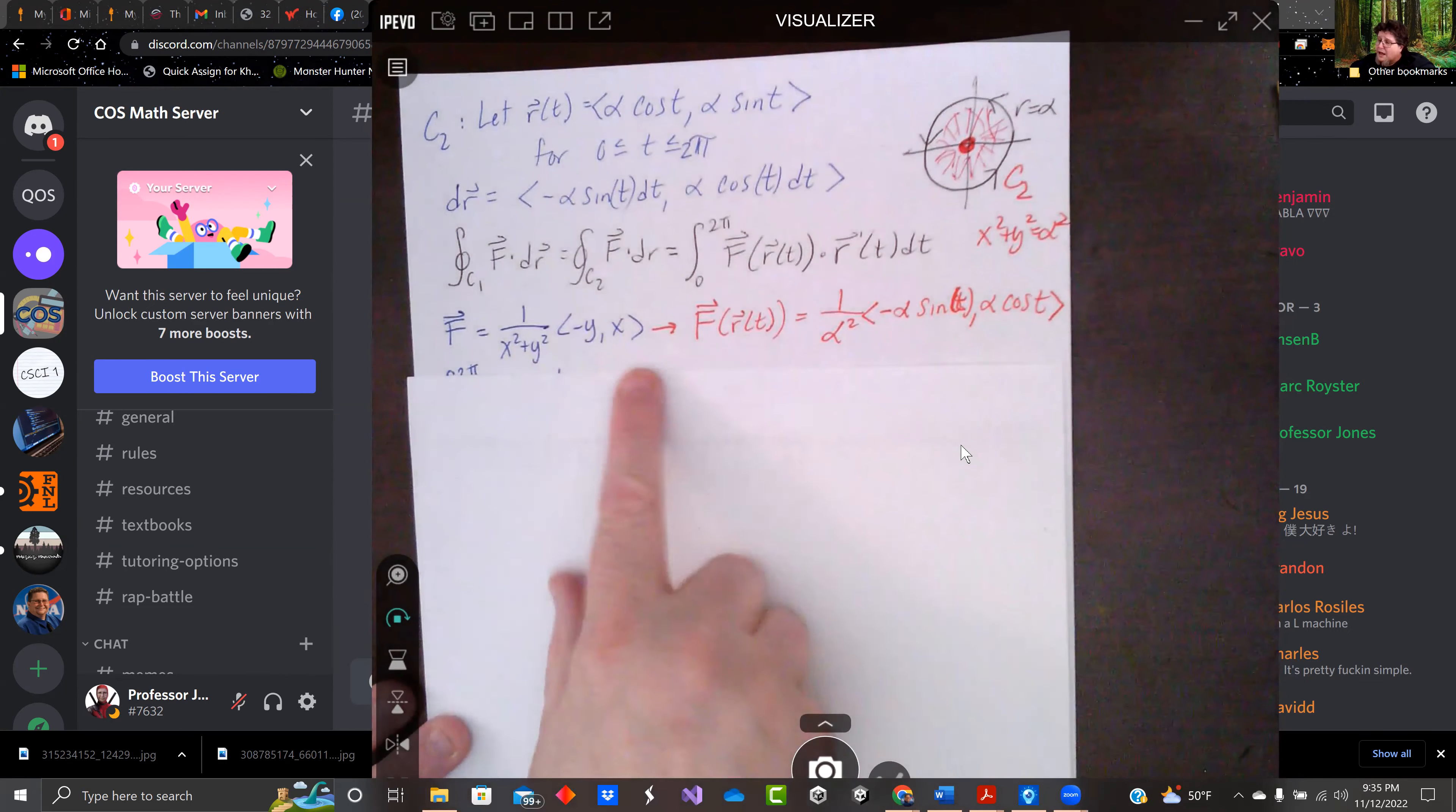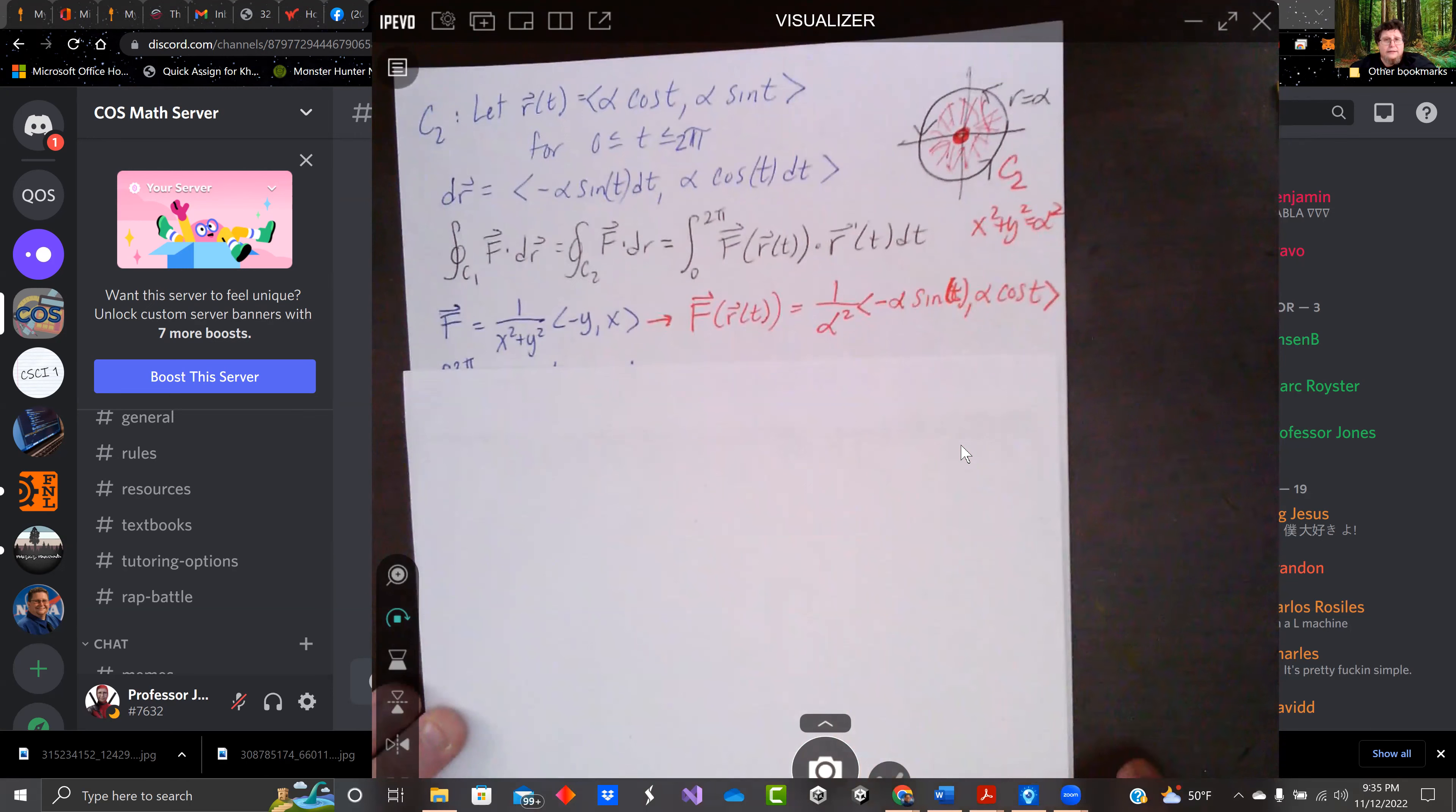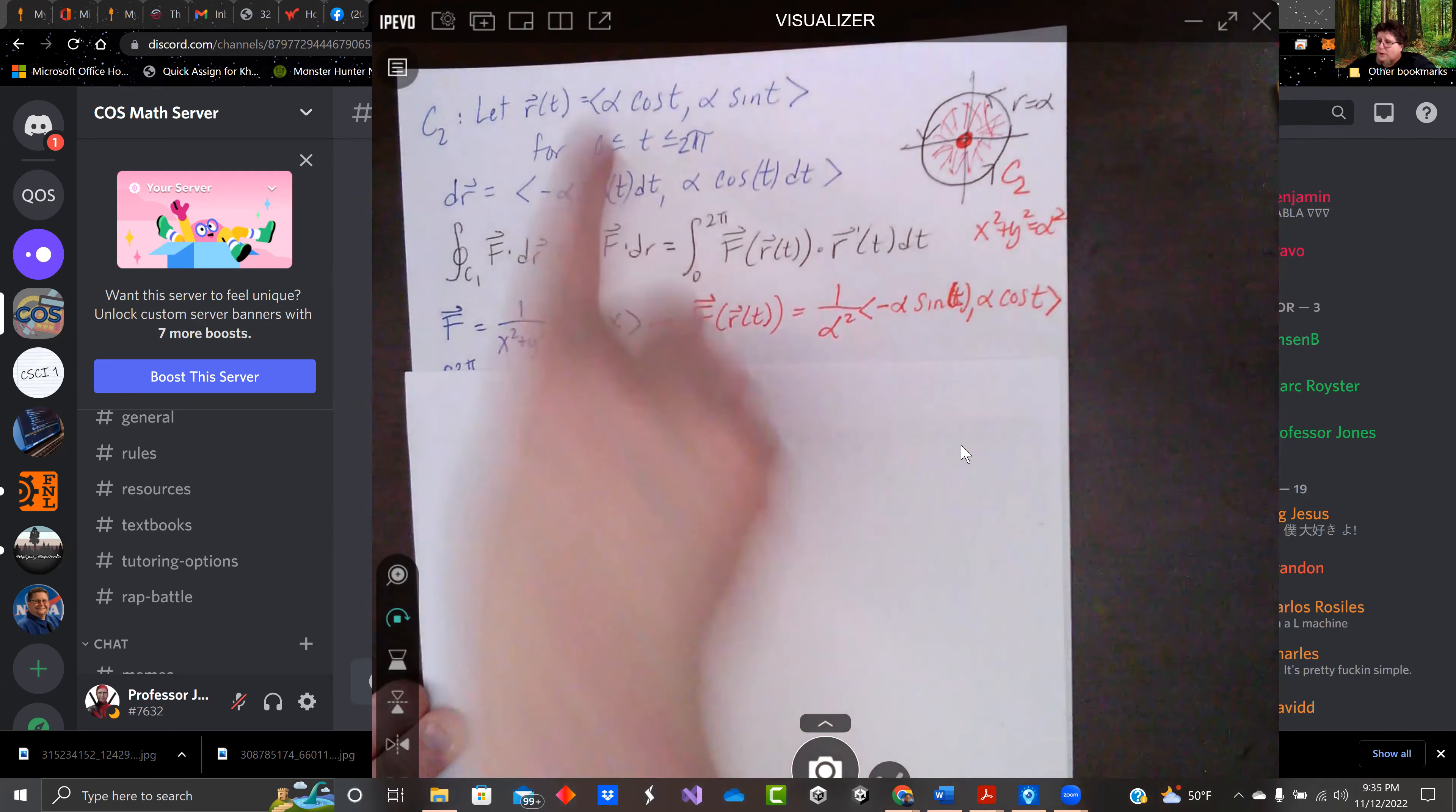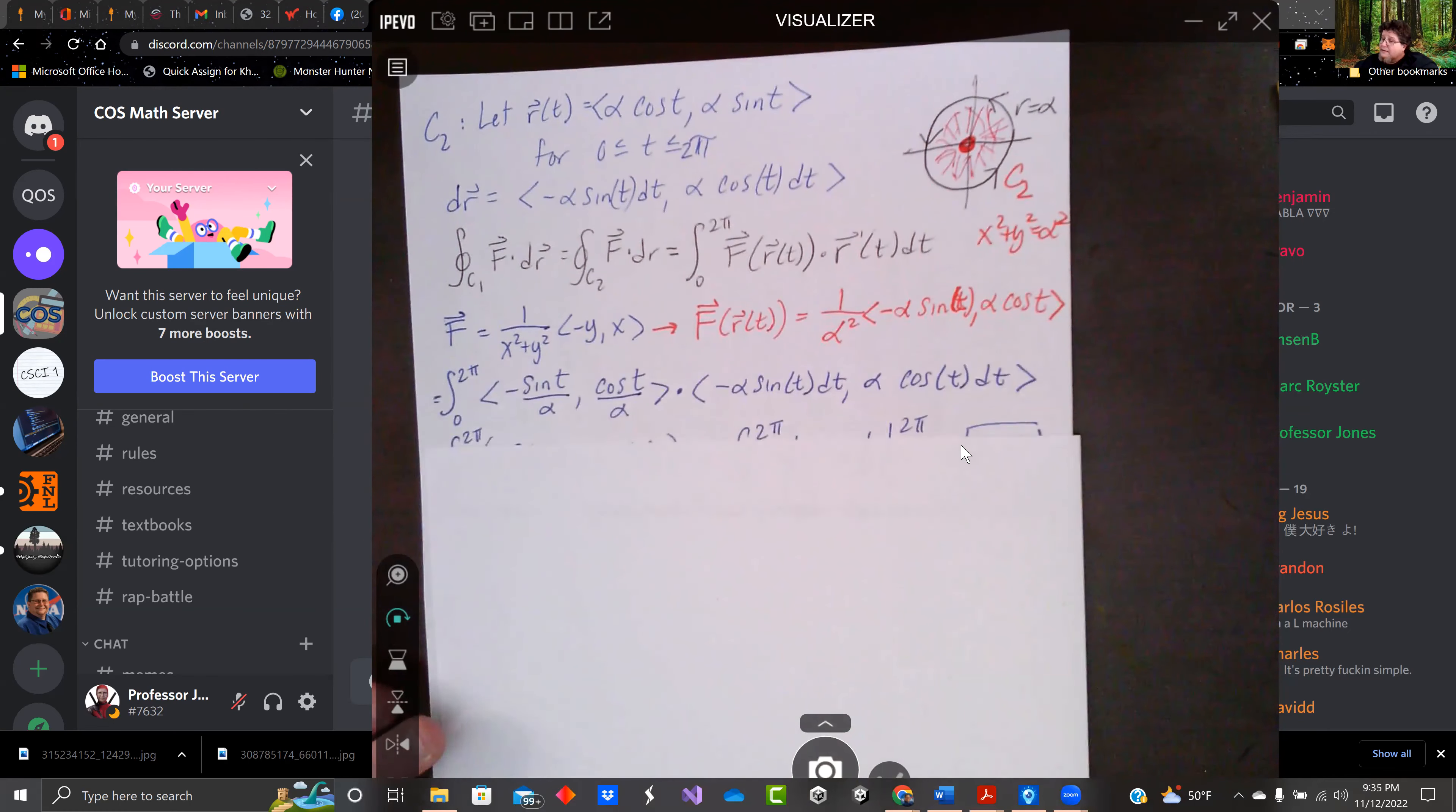f is kind of ugly, but when we switch it to r(t), x squared plus y squared is our radius. And our radius is alpha, so this just becomes 1 over alpha squared. And we replace negative y and x with negative alpha sine t and alpha cosine t, since that was our components x and y.